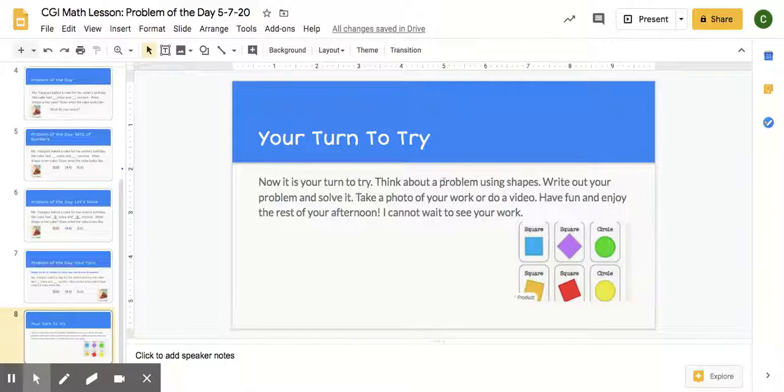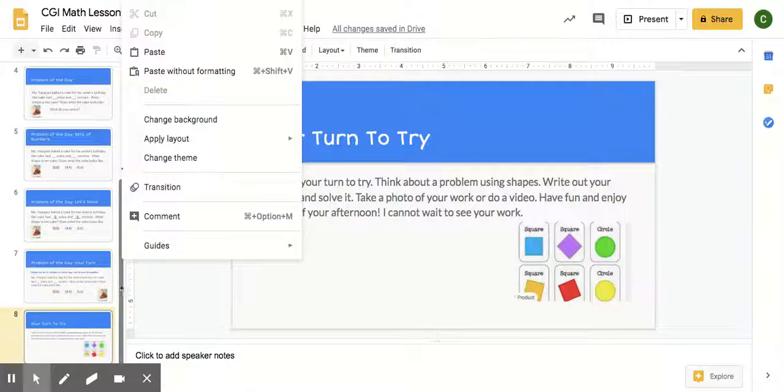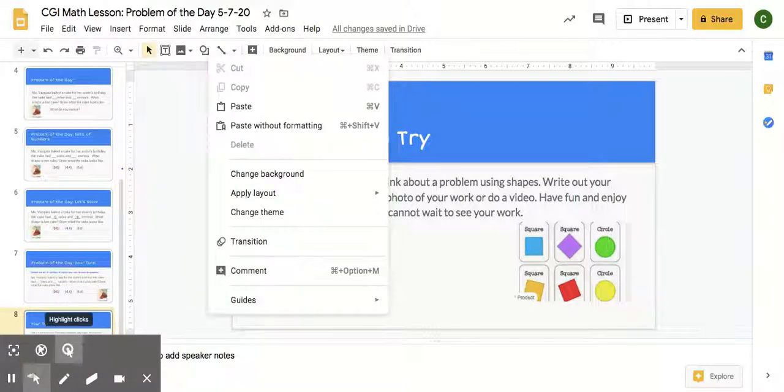It's your turn to try. Now it's your turn to try. Think about a problem using shapes. Write your own problem and solve it. Take a photo of your work or do a video. Have fun and enjoy the rest of your afternoon. I cannot wait to see your work. So I want you to think of some shapes and think of a problem of the day that you can write about a shape. Maybe you want to tell your friend that you want them to draw this shape, and you have to give them the directions of how to make the shape. How many sides does it have? How many corners does it have? Are you ready to try? Awesome. Can't wait to see your stories. Have a great afternoon. Thank you.